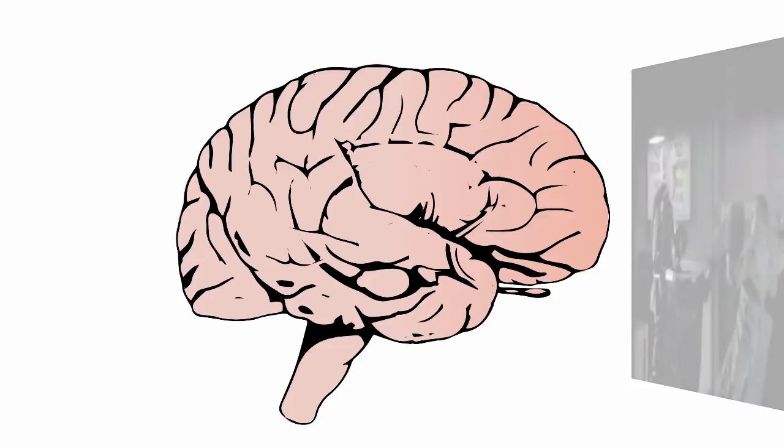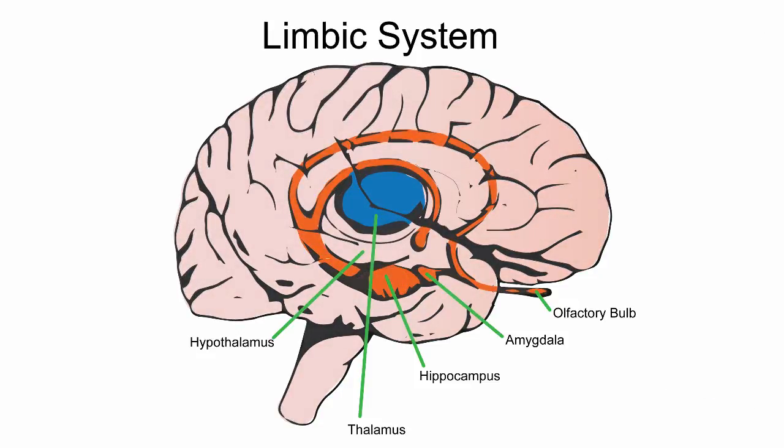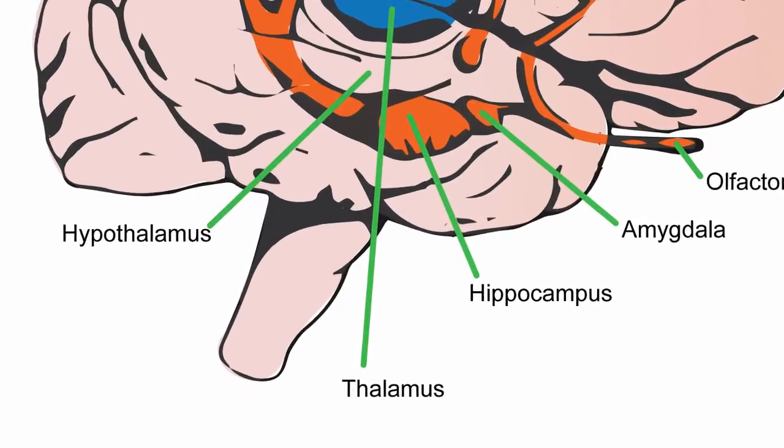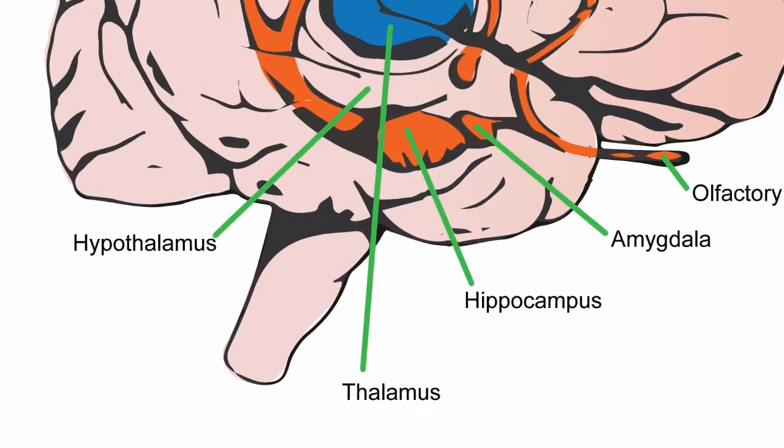One important set of brain structures is the limbic system. The limbic system includes a number of structures such as the amygdala, hippocampus, hypothalamus, and regions of the cerebral cortex.